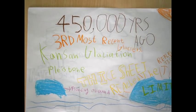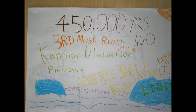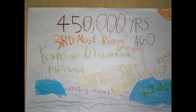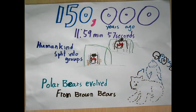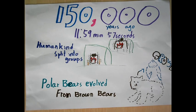450,000 years ago, the third most recent glaciation happened — the Kansan glaciation. The ice sheet reached its limit. 150,000 years ago, at 11:59 and 57 seconds, humankind spread into groups, and polar bears evolved from brown bears.